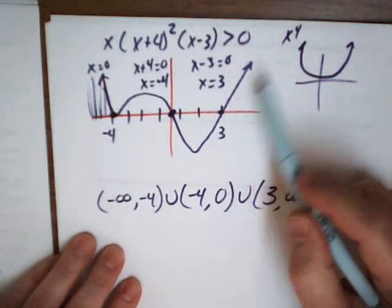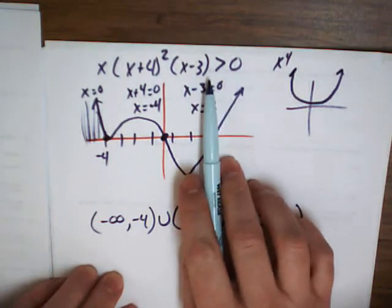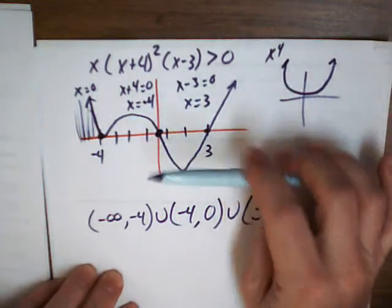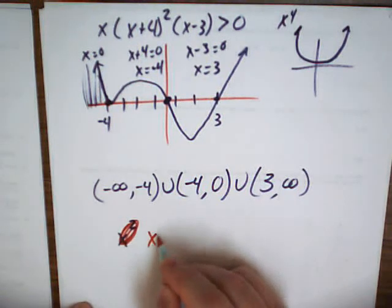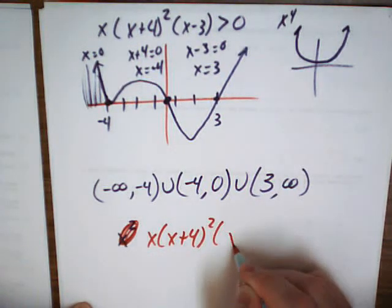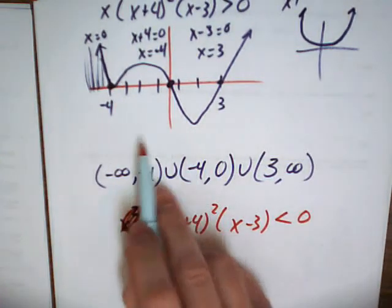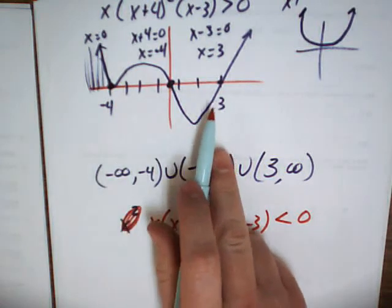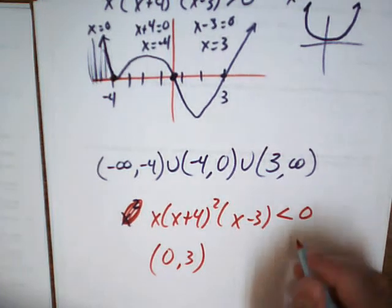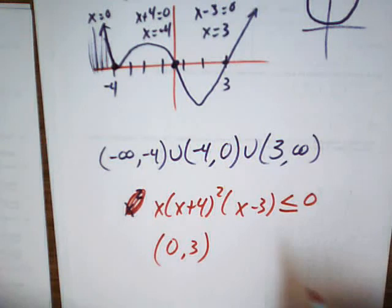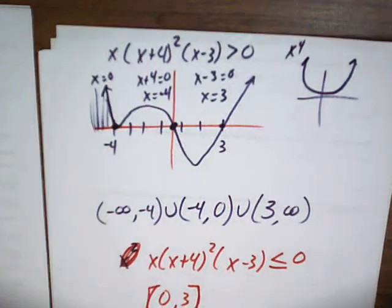And if I flip that inequality around, we talk about below the x-axis. If it was less than, you would say 0 to 3. That'd be it. What if it had a bar here — what would that change? Use brackets. So, we'll leave it at that.